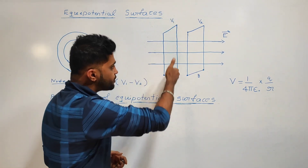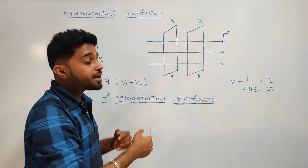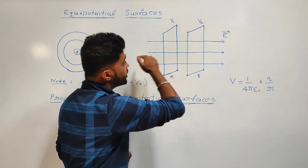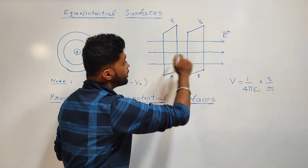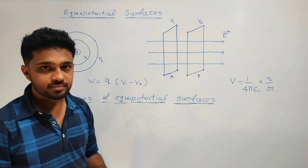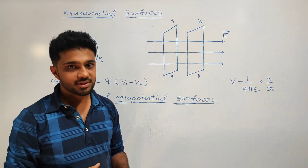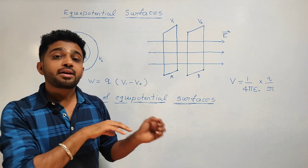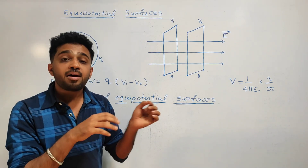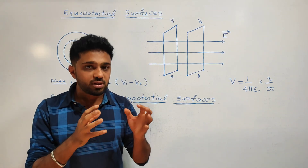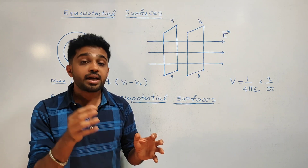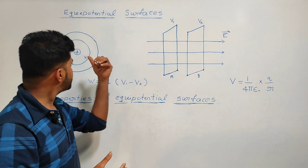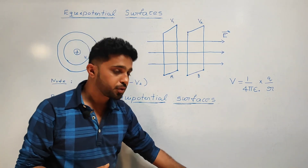Next property — consider this diagram. This is a plane surface. Electric field direction is A. The equipotential surface is perpendicular to the electric field direction.